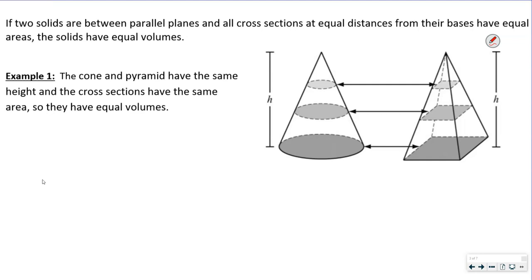Basically, if we're looking here at one and one, they're at the same level at the base. And if we move up — let's just say this was two inches — every time we go up, the area is the same. So if this was one here, and then this was one half and one half, and then one fourth and one fourth — because as we move up every two inches the area is the same — then the volume of these two figures has to be the same.